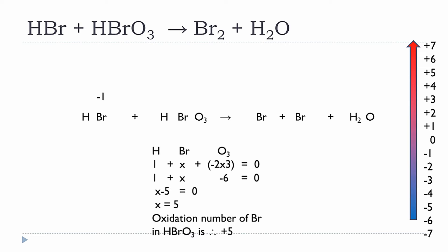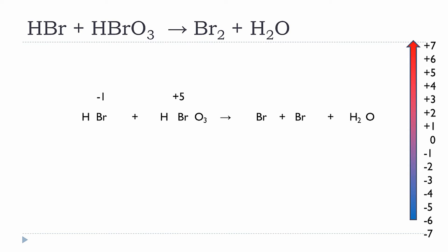Oxygen has an oxidation number of minus two, and with three oxygens the net charge of oxygen is minus six. So we write: 1 + x − 6 = 0, which reduces to x − 5 = 0, giving x = +5. Therefore, the oxidation number of Br in HBrO3 is plus five, while oxygen remains minus two.